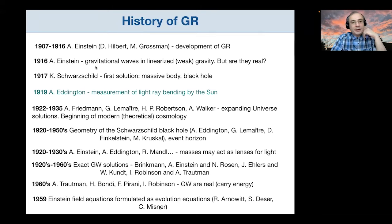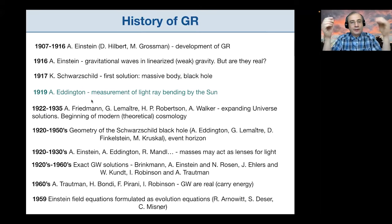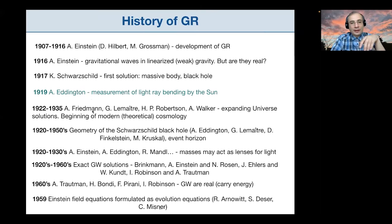Only a year later, a German astronomer named Schwarzschild found the first solution of Einstein's field equations corresponding to a massive body — or as we later found out, a black hole. The theory was accepted by the community fairly early, and Arthur Eddington in 1919 measured for the first time one of the consequences of GR: the gravitational bending of light rays by the Sun during a total eclipse.